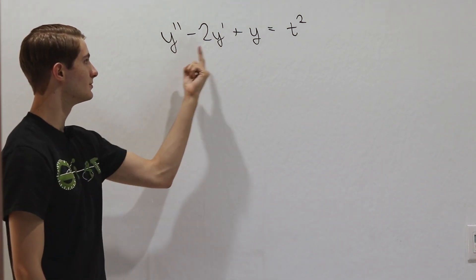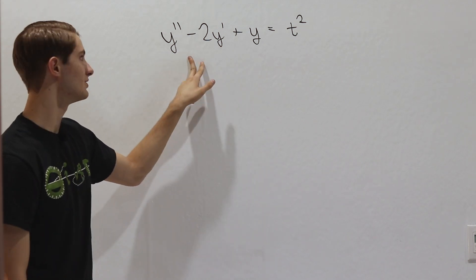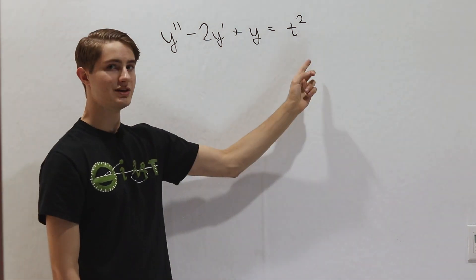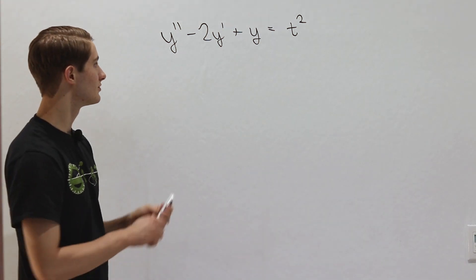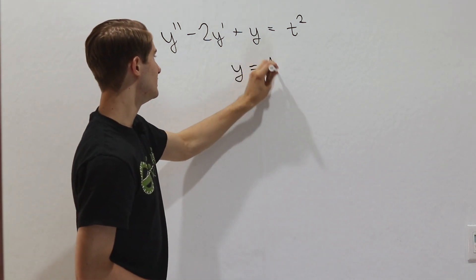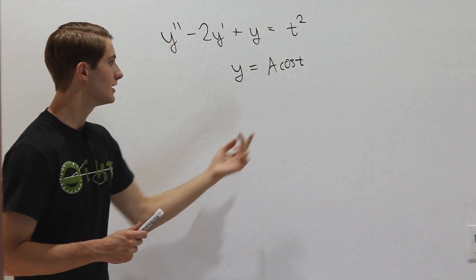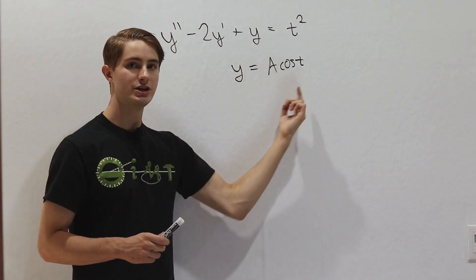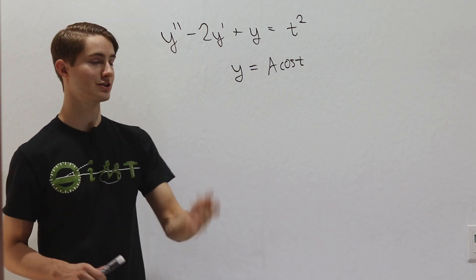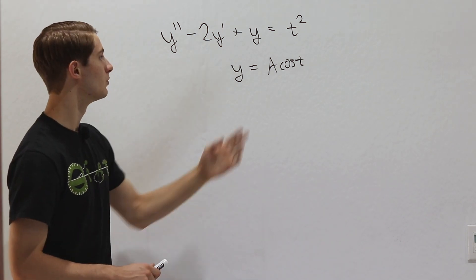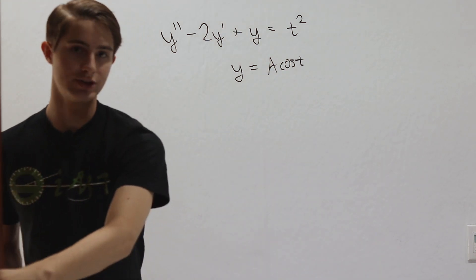The undetermined coefficients method says that we know a lot about the form of our solution y based on this equation. Because all terms on the left side are multiplied by constants and the right side has t squared, we know y could not equal cosine t — no matter how many times we differentiate cosine, we only get sines and cosines back, never t squared.